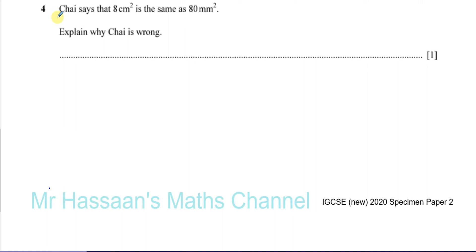Here we have a question that says Chai, that Chai says that 8 cm² is the same as 80 mm². Explain why Chai is wrong.